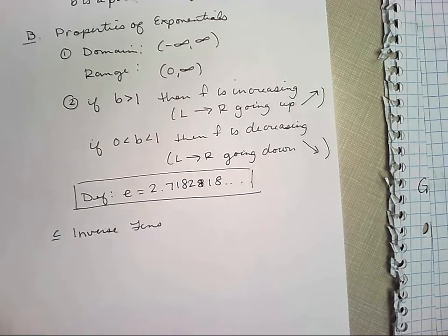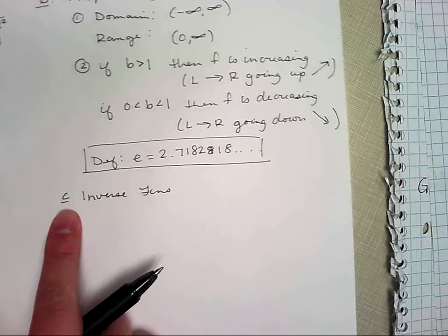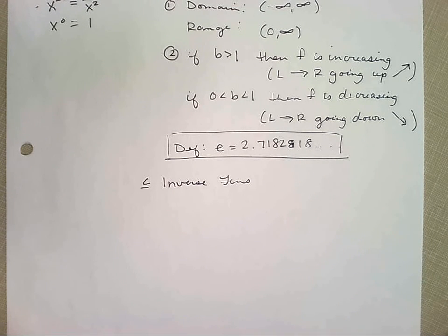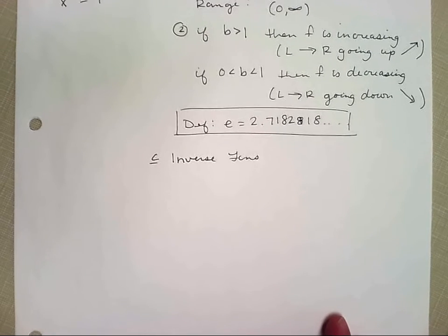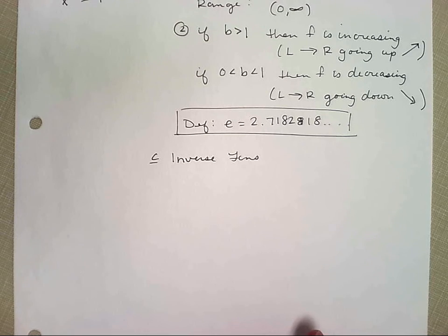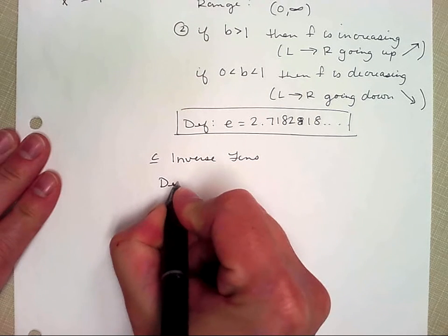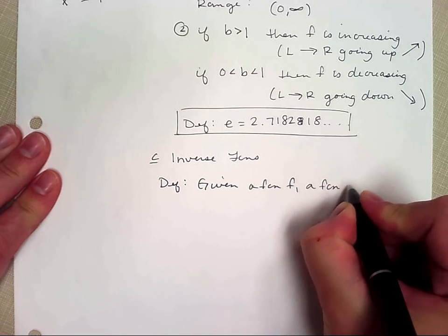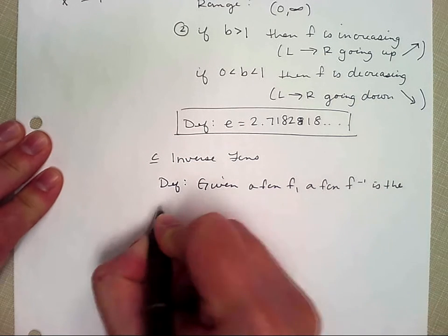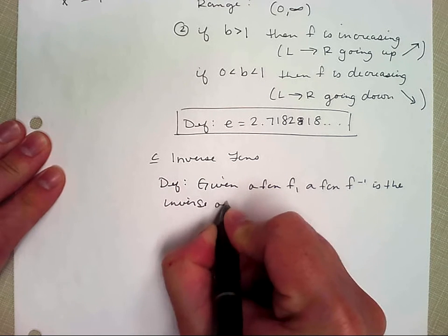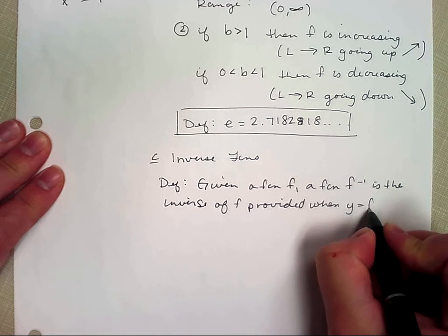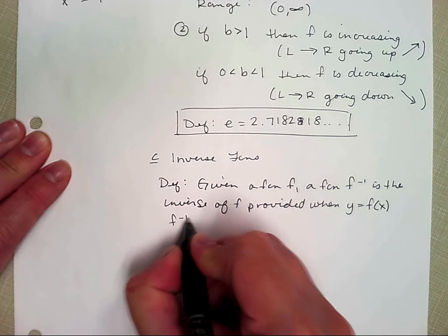Okay, so we're still talking about section 1.3, inverses, exponential, and logarithmic functions. We left on part C, which talks about inverses. Let's define an inverse. Given a function f, a function f inverse is the inverse of f, provided when y equals f of x, f inverse of y equals x.